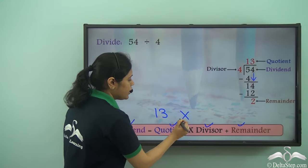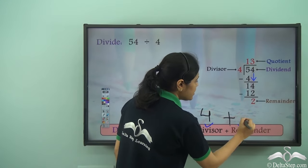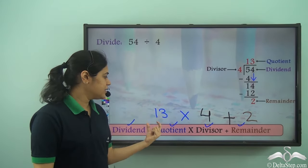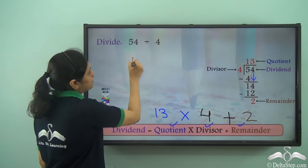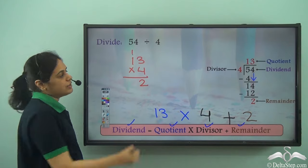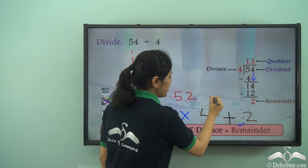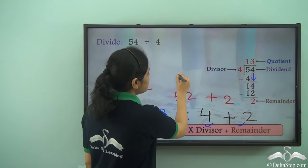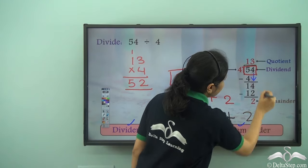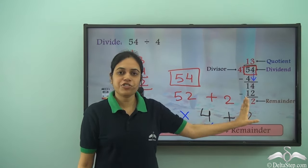I have 13 into divisor 4, plus remainder 2. First I need to multiply 13 by 4. 4 into 3 is 12, so I have 1 carry. 4 into 1 is 4, plus 1 is 5. I get 52. So 13 into 4 is 52. And I have plus 2. 52 plus 2 is 54. The dividend is 54. So quotient into divisor plus remainder gives me the dividend, which means my division is correct.